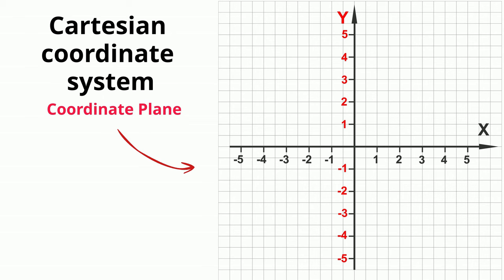The coordinate plane is made up of two number lines, one horizontal and one vertical. They intersect at right angles.